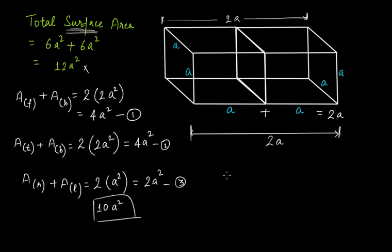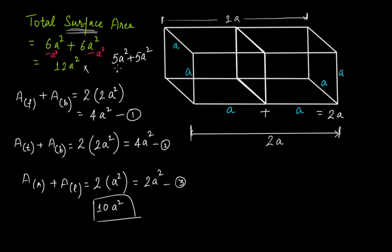There is a quicker way: the total surface area of the first cube is 6a² and the second is also 6a². When joined, we lose two faces — the right side face of the first cube and the left side face of the second cube. So we subtract 2a²: 6a² - a² + 6a² - a² = 5a² + 5a² = 10a².